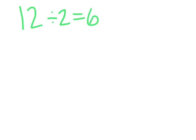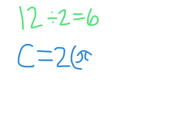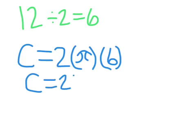Now we plug it all in. The circumference equals 2 times pi times 6. So circumference equals 2 times pi times 6 is 18.84.